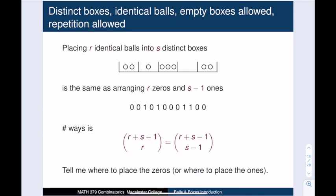We can generalize this argument. Placing r identical balls into s distinct boxes, where boxes can be empty and repetition is allowed, is the same as arranging r zeros and s minus one ones. The number of ways to do that is r plus s minus one choose r, or equivalently r plus s minus one choose s minus one.